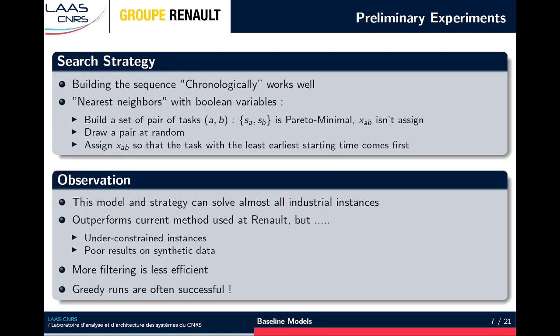About the search strategy, it turns out that building the sequence of tasks chronologically seems to be the best approach to solve this problem. We can try to do something like this with our boolean variables. First, we have to compute the set of non-ordered pairs of tasks such that their earliest starting times are Pareto minimal. Then, we draw a pair in this set and we assign the boolean such that the task with least earliest starting time comes first. This procedure, with the constraint propagation, performs a kind of nearest neighbor heuristic like the one in the TSP. This model was implemented in Troco and this strategy allows us to solve efficiently almost all instances from industrial data, almost without any fail, and it also outperforms the current method used at Renault.